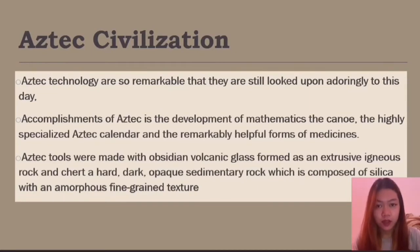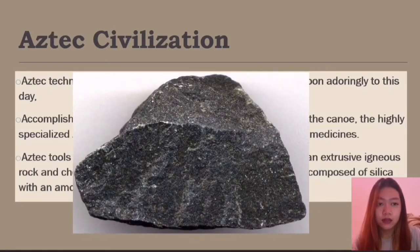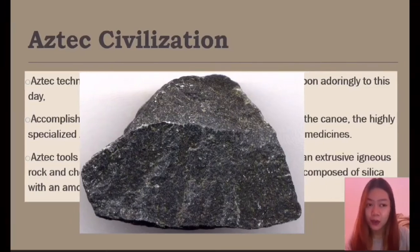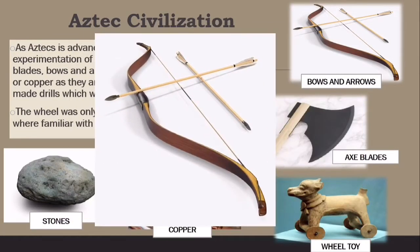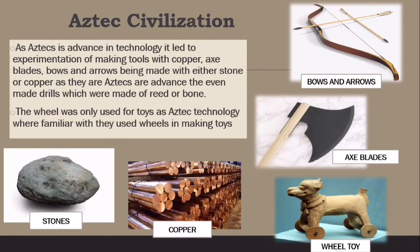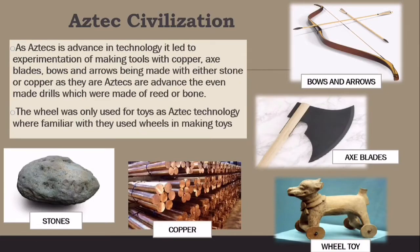Aztec tools were made with obsidian — a volcanic glass formed as an extrusive igneous rock — and chert, a hard, dark, opaque sedimentary rock composed of silica with an amorphous fine-grain texture. As Aztec technology advanced, it led to experimentation with making tools from copper, including axe blades, bows, and arrows made with either stone or copper. They even made drills from thread or bone. The wheel was only used for toys.